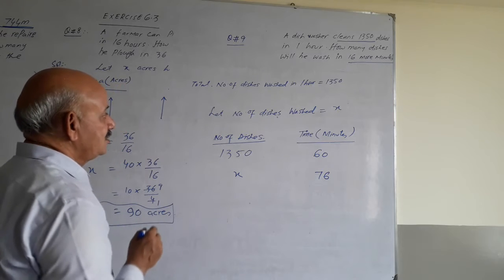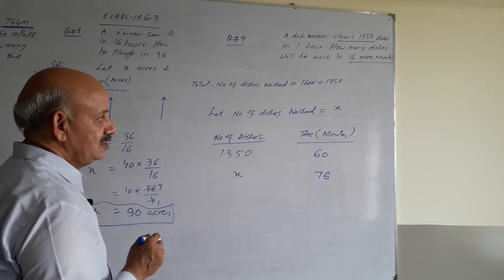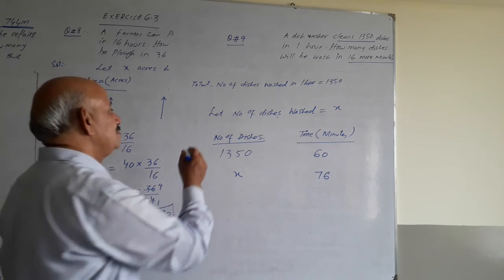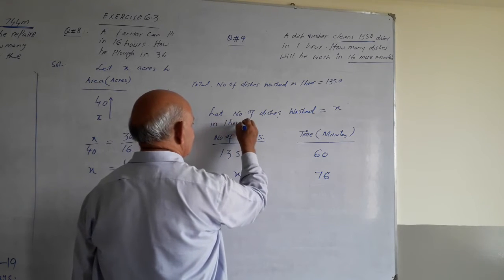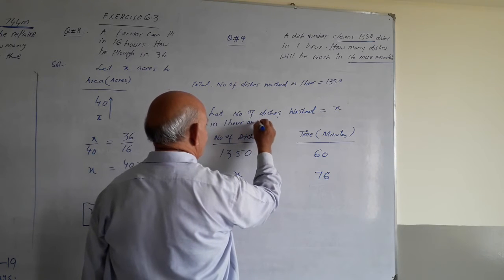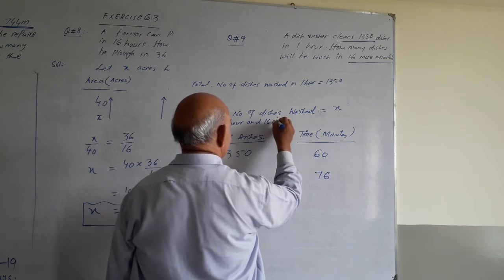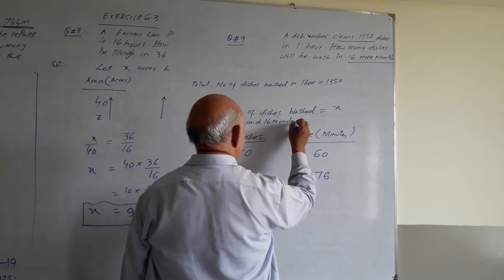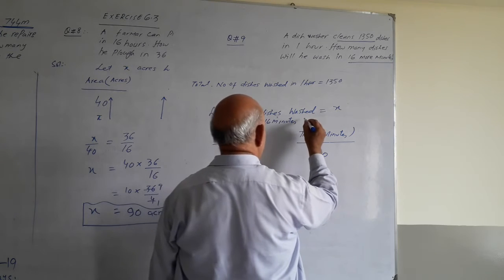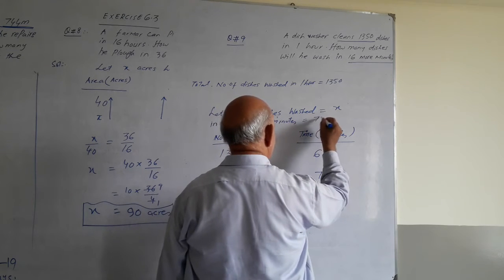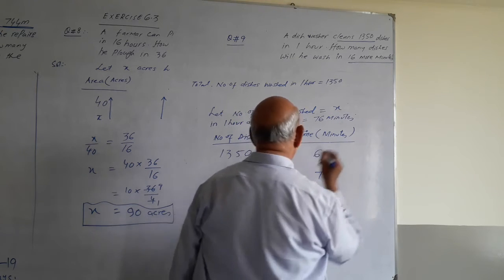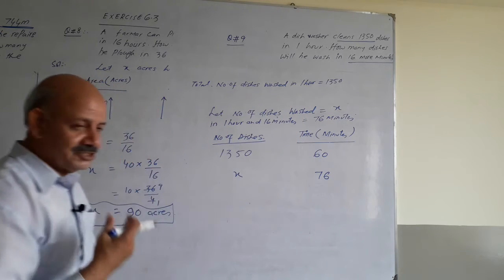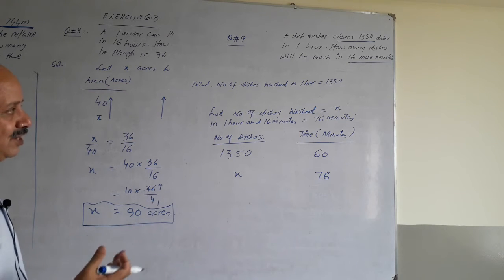So we calculate number of dishes washed is equal to x in 1 hour and 16 minutes. It means it is 76 minutes. 1 hour is 60 minutes, if you have more than 1 hour, 60 minutes plus 16 is 76 minutes.